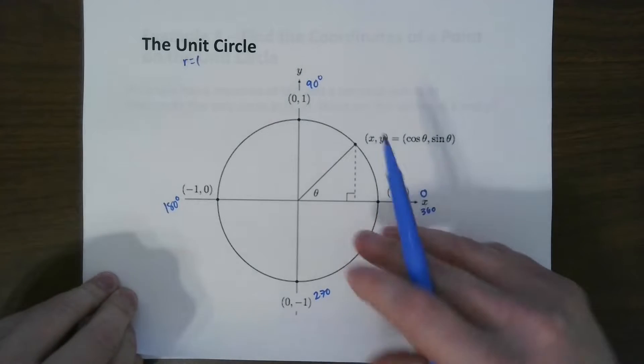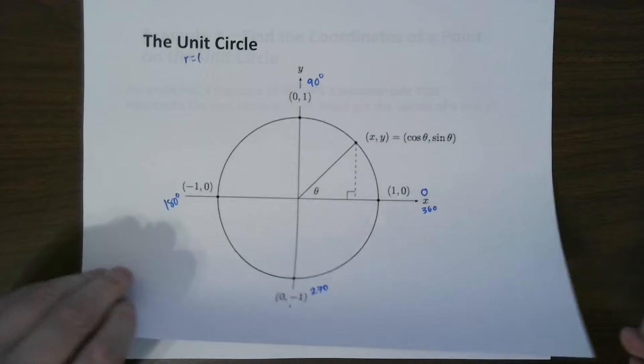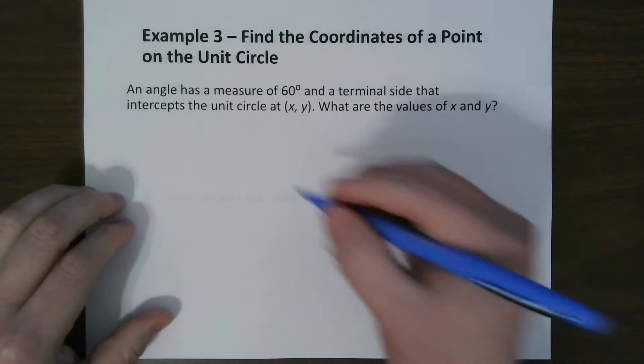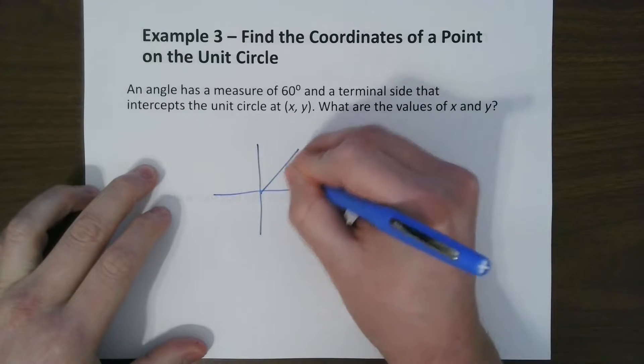So let's develop some of these angles that are in here. So it says an angle has a measure of 60 degrees with a terminal side that intercepts the unit circle at x, y. What are the values of x and y? Well, let's just draw it.